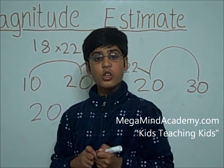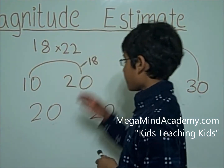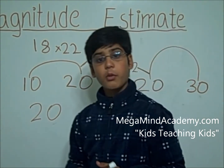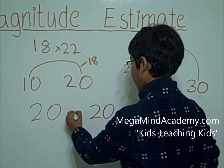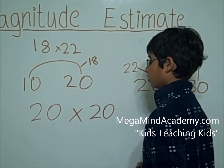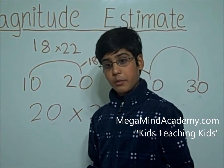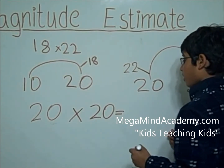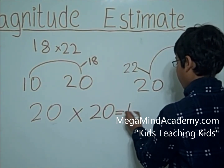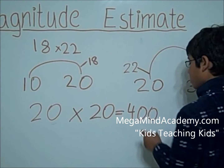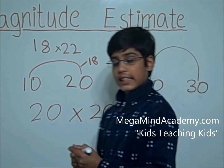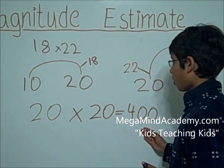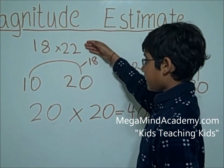Now, the actual problem is 18 times 22, so you're multiplying. We're going to put the multiplication sign over here. So now the estimate is 20 times 20 equals 400. The magnitude estimate is 20 times 20 equals 400 for 18 times 22.